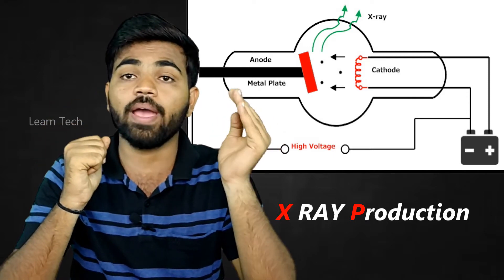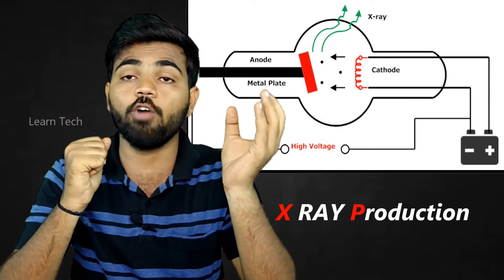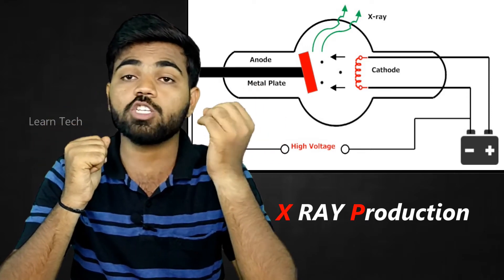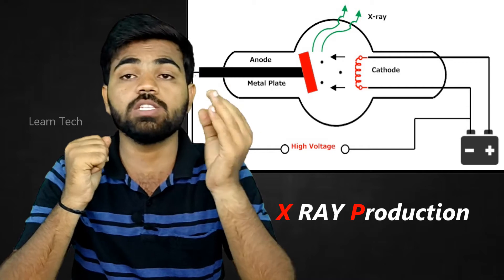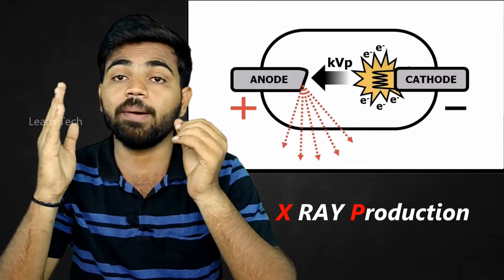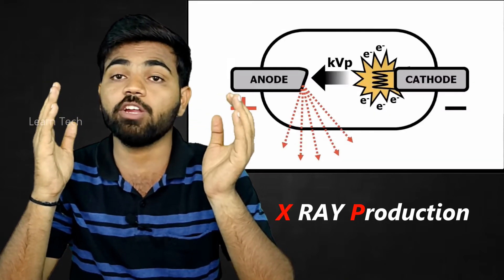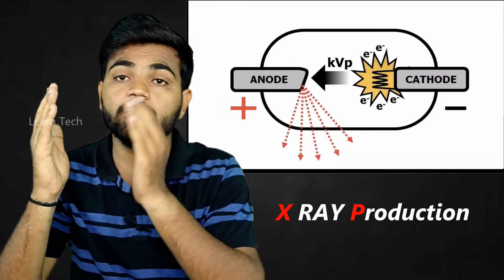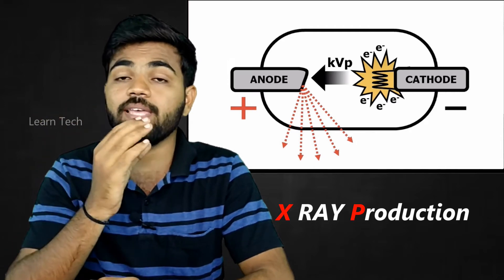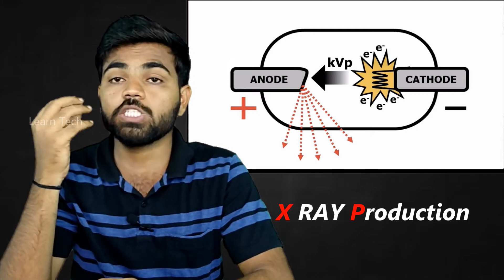The flow of electrons — electrons carry negative energy and positive energy — electrons and energy.